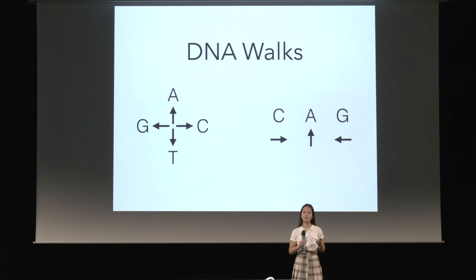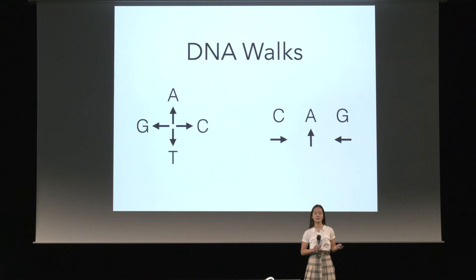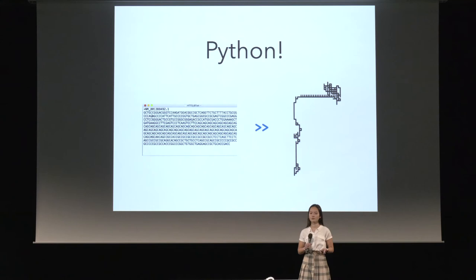A DNA walk is a drawing that represents a DNA sequence visually. So instead of writing CAG, you would have a line going forwards, up and back, because each base in the DNA is represented by a line going in a certain direction. Doing this by hand would take way too long, so in my project I used Python code to do this for me.